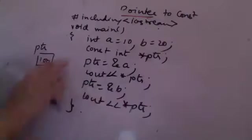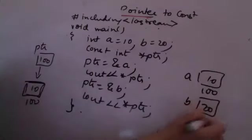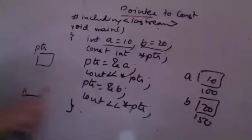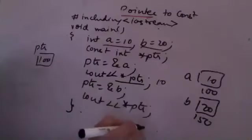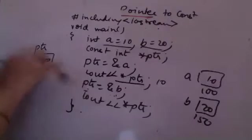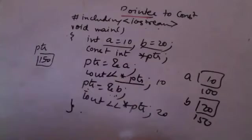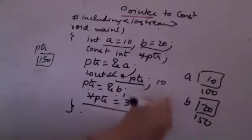Earlier in the constant pointer case, the pointer's address value could not change. Now here, a is having value 10 stored at address 100, and b is having value 20 stored at address 150. The pointer is given the address of a, which is 100. Printing the value at a gives 10. Now I am changing the pointer address to 150 — this is allowed because the pointer is still a variable. So 20 is printed. But if I now say that the value at pointer changes to 30, this line is going to give me an error.